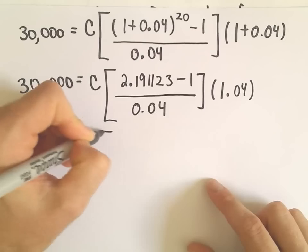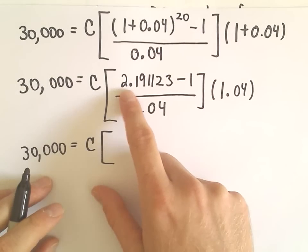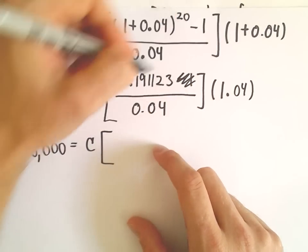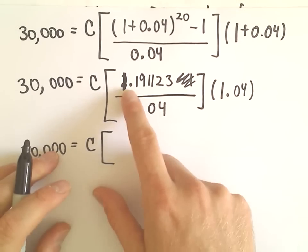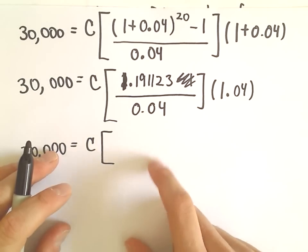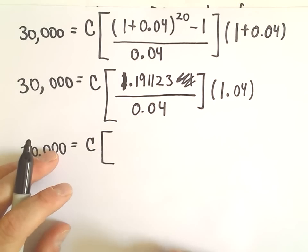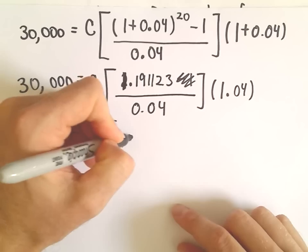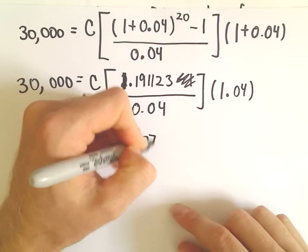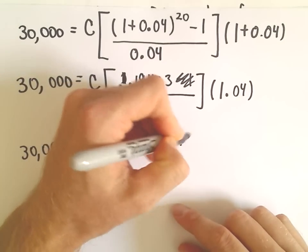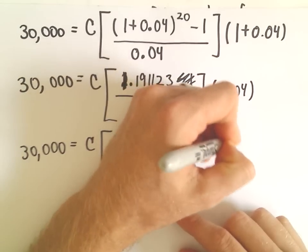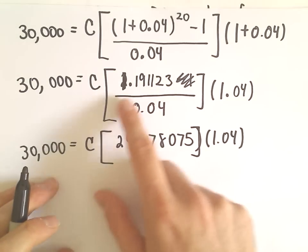So I'm going to do two steps at once here. If we take 2.191123 minus 1, that's just going to turn into 1.191123. And then if we divide that by 0.04, I'm getting that to equal 29.778075. So I just subtracted the 1 and then divided.